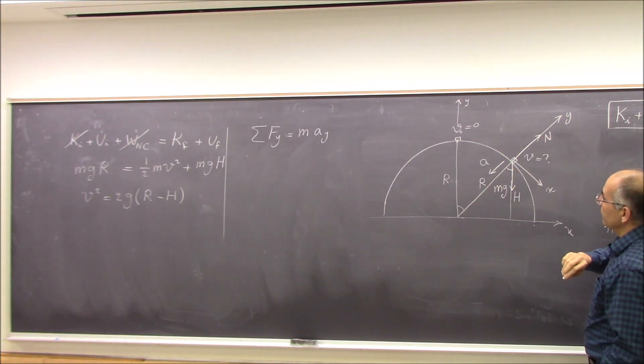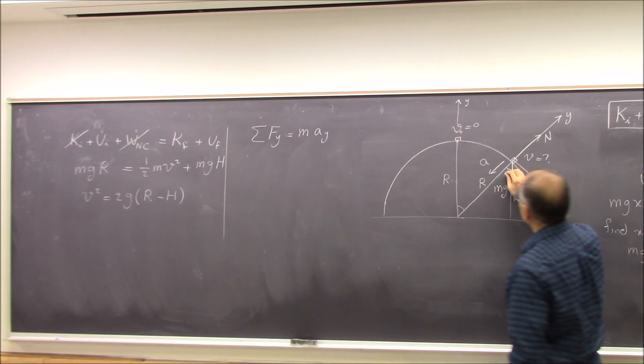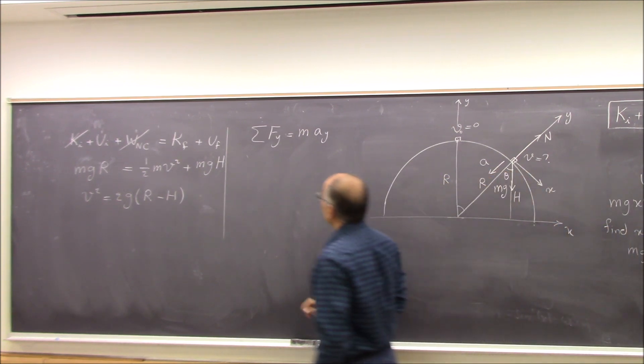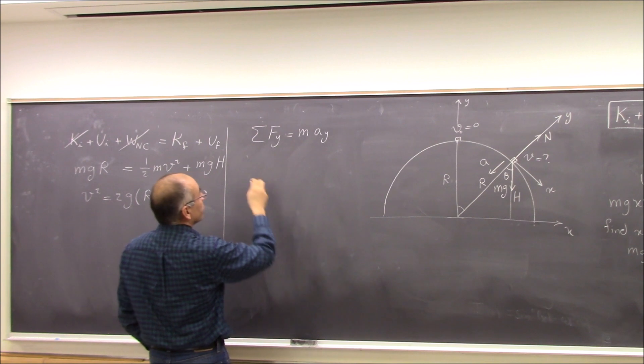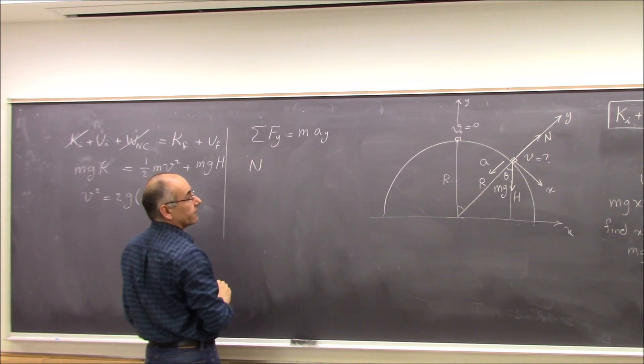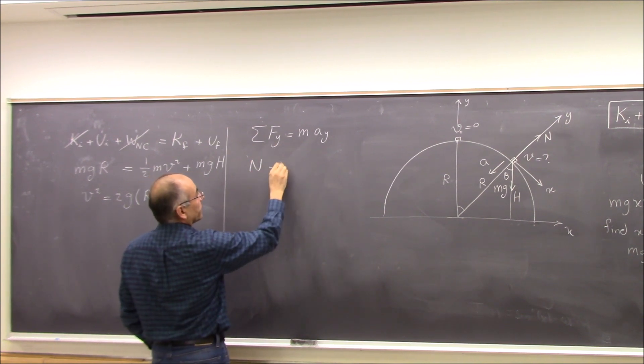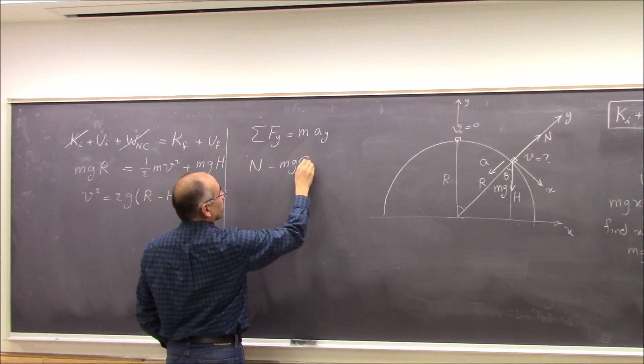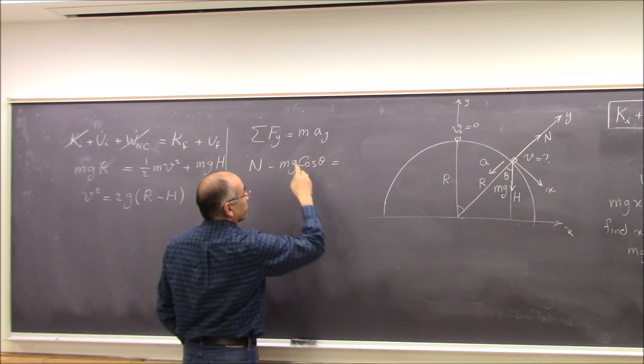If I take this angle as theta, let's call this theta, sum of Fy is normal force magnitude minus Mg cosine theta. N minus Mg cosine theta equals M Ay.